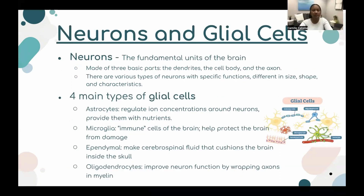Moving away from large structures and tissues of the brain, let's talk about the specific cells that make up the brain. Neurons are the fundamental units of the brain, made of three basic parts: dendrites, the cell body, and the axon. Other than neurons, there are glial cells that help support the neuron. These cells are extremely important. There are four main types of glial cells: astrocytes, microglia, ependymal cells, and oligodendrocytes.